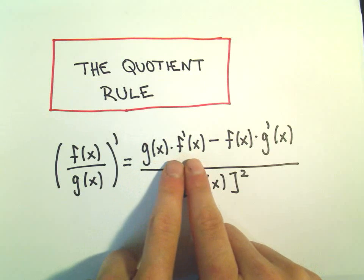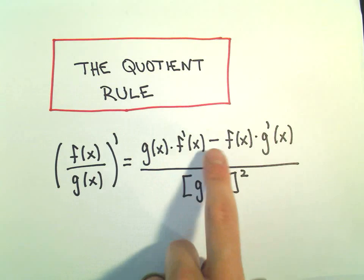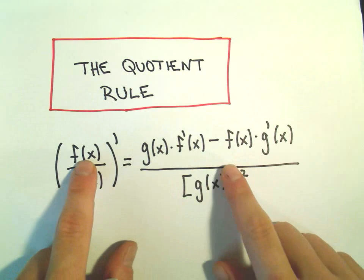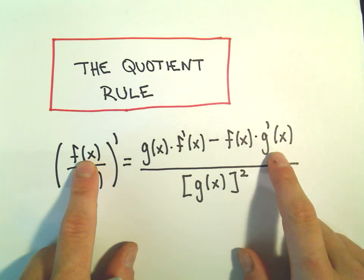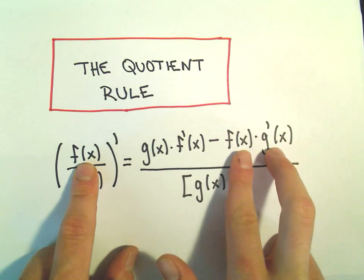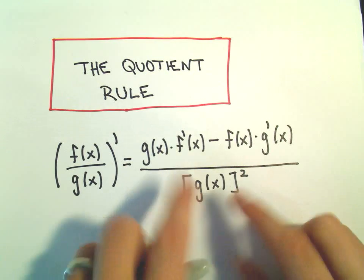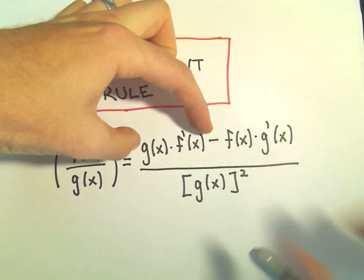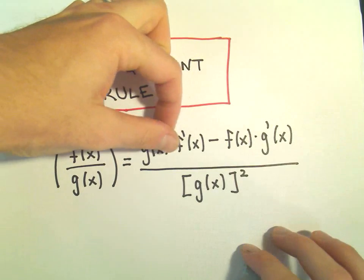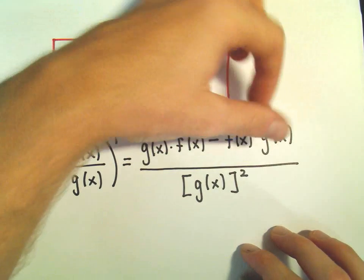I mean, you can do f prime times g, that's the same thing. And then we subtract away whatever's in the numerator times the derivative of what's in the denominator. Same thing, you can flip these around. Be very careful, though. You can't switch the whole terms around, right? You can switch the multiplication involved, and that's equivalent.